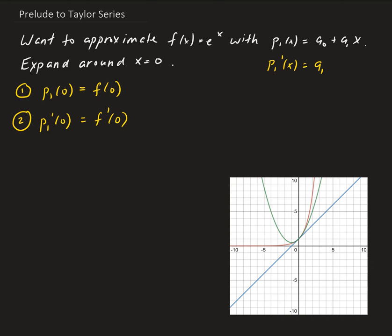From the first equation, we evaluate the polynomial at 0. That gives us a0 equals f of 0, and e to the 0 is just 1. For the second condition, we evaluate the derivative at 0. The derivative of p is just the constant a1, and we want that equal to the derivative of f at 0, which is also 1. So a0 is 1 and a1 is 1, meaning our first degree polynomial is x plus 1.